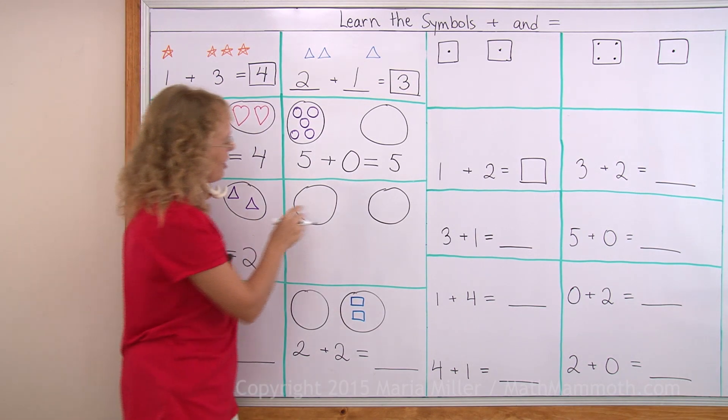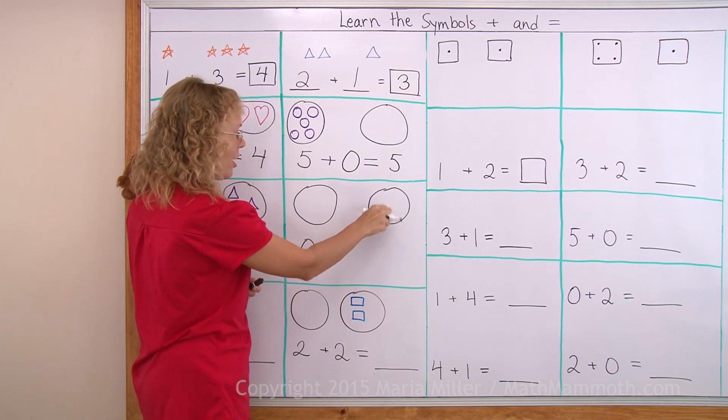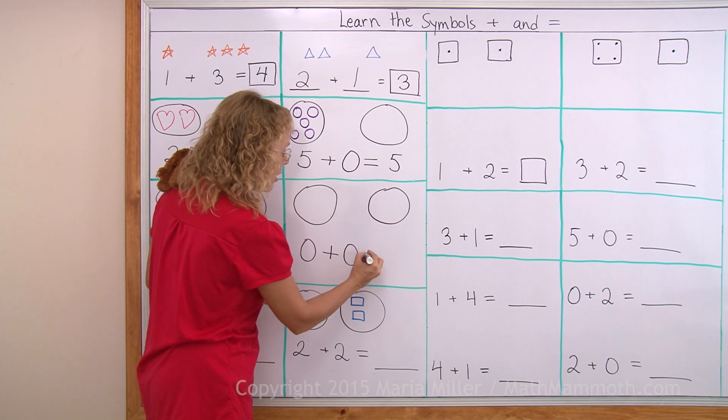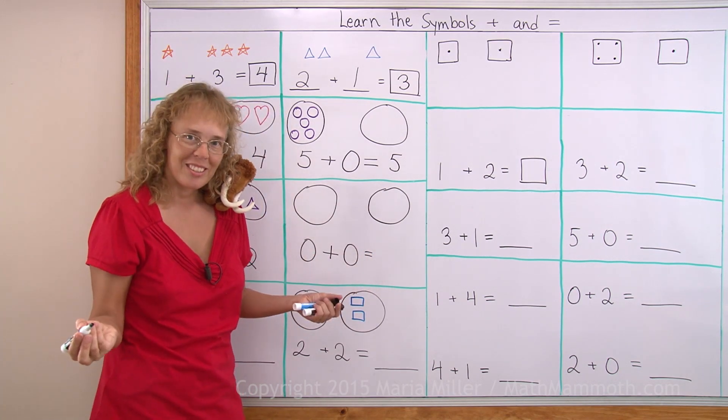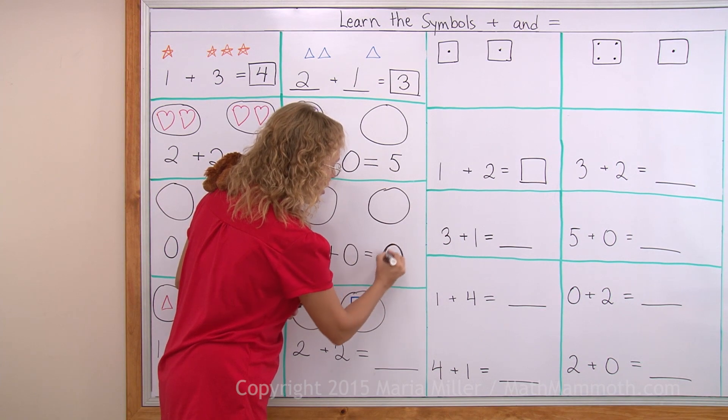Good job. Over here. None. So it is zero. Over here. None. So it is zero again. Zero plus zero. And that equals how much? A big fat zero. Just nothing.